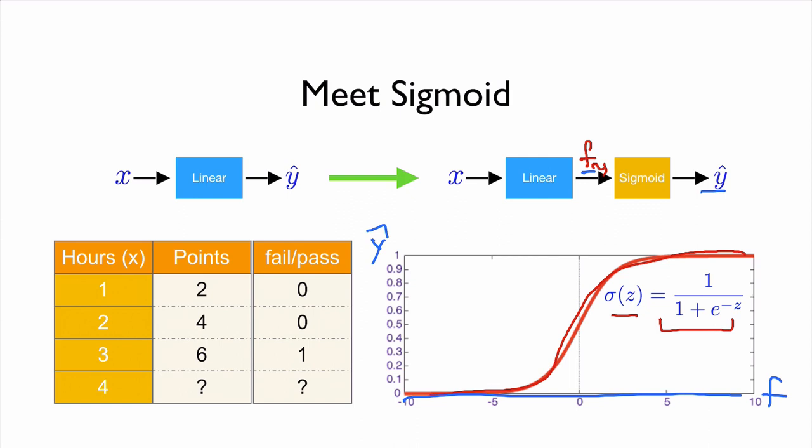So if f value is getting really big, then the y hat is getting close to 1. If f value is getting really small, then y hat value is close to 0. So that means that always this y hat value will be between 0 to 1. So we squash the numbers, big numbers, small numbers to between 0 to 1.